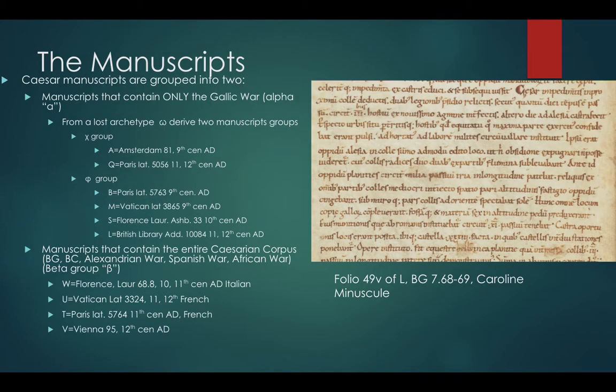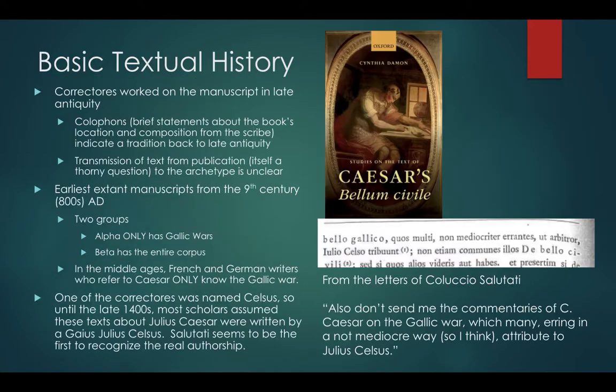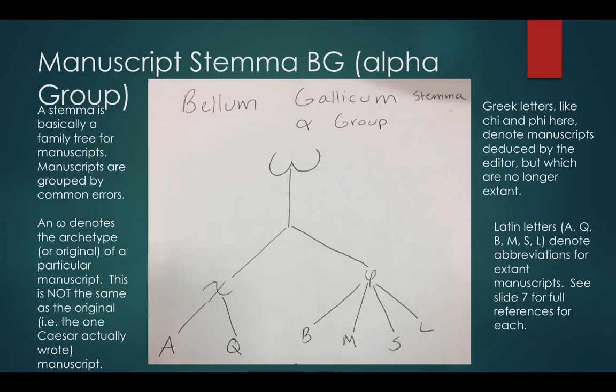We're not so much worried about those basic points as how we figure out how manuscripts are related, and that's where this image comes in. This is a stemma — a family tree of manuscripts. We start at the bottom with the Roman letters: A, Q, B, M, S, L.